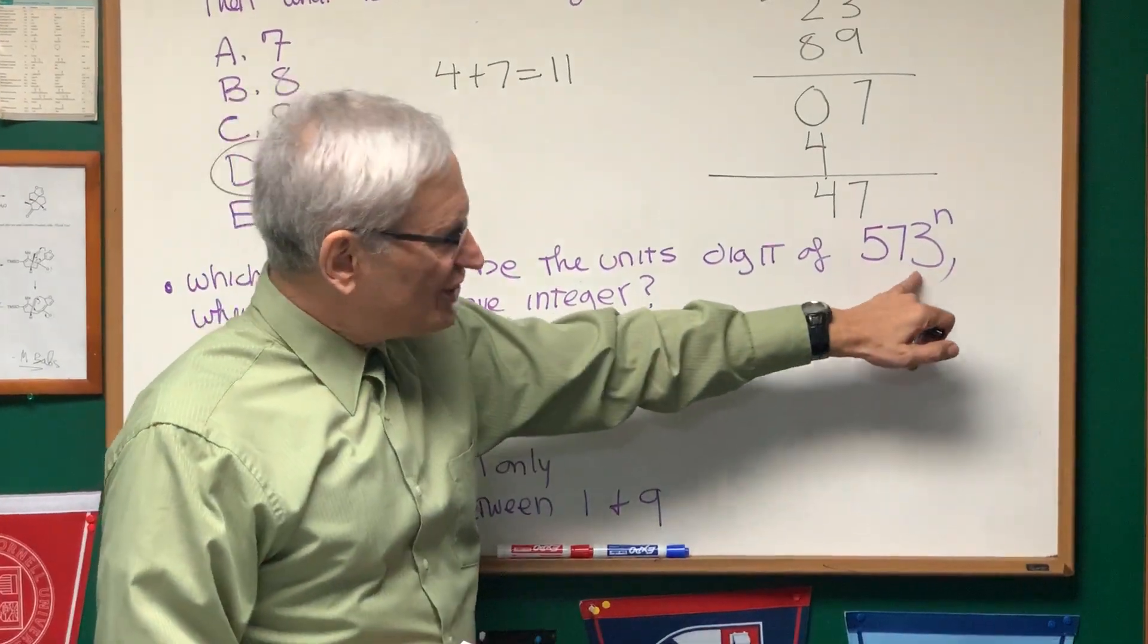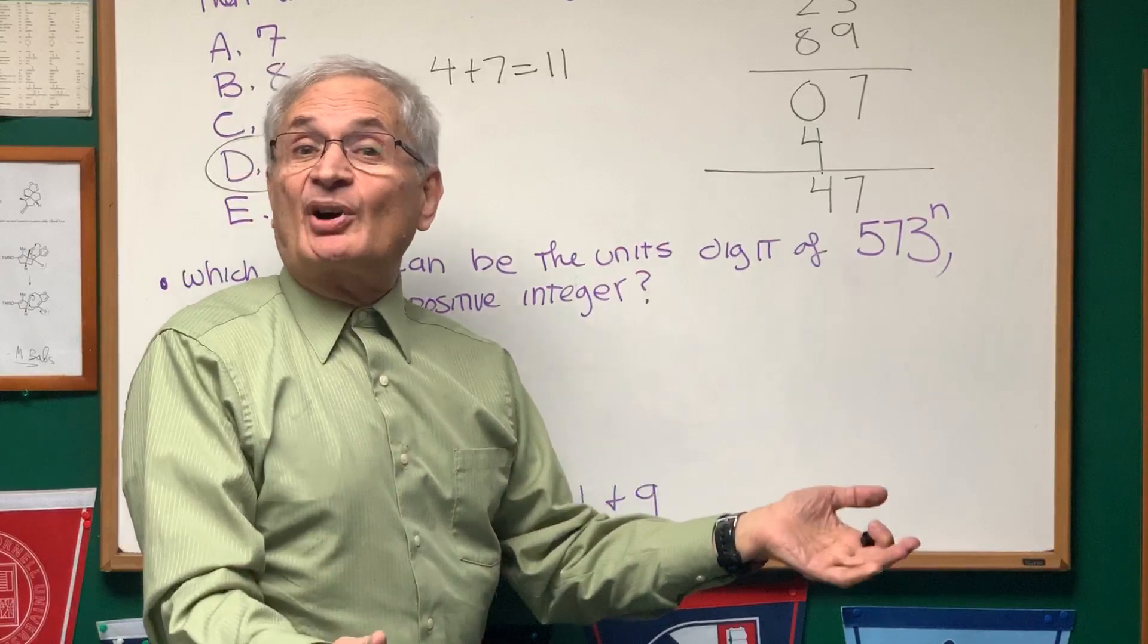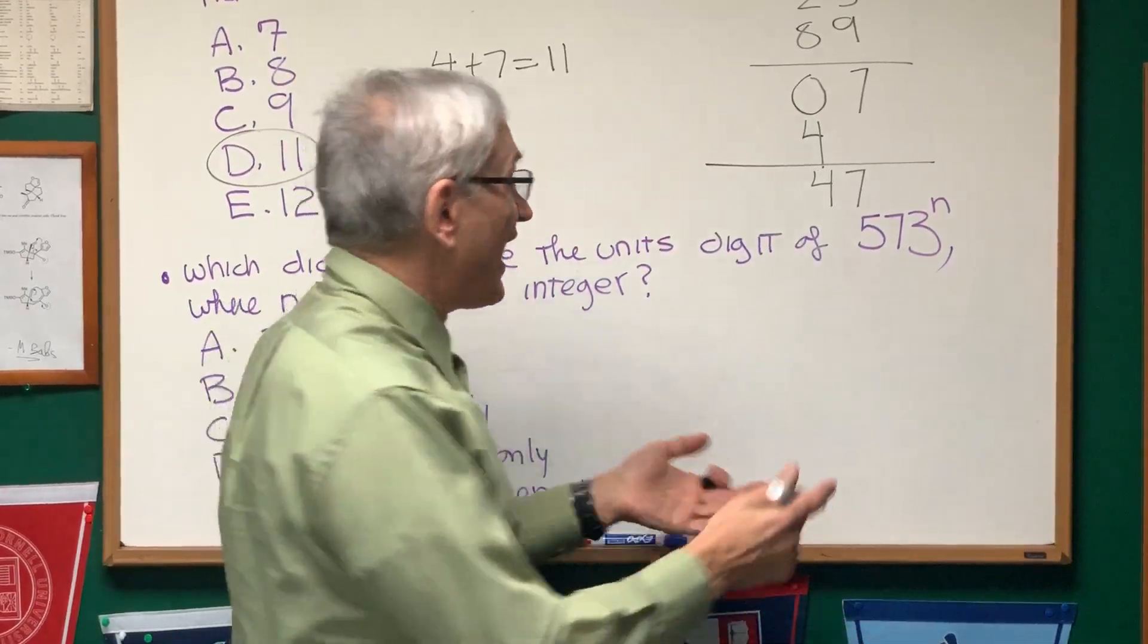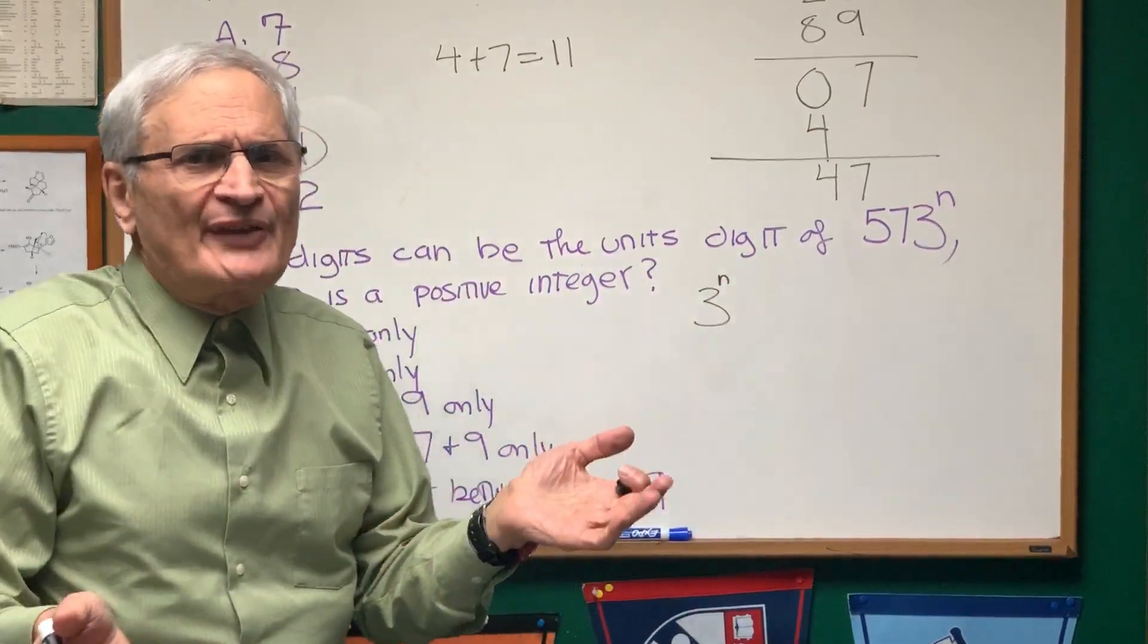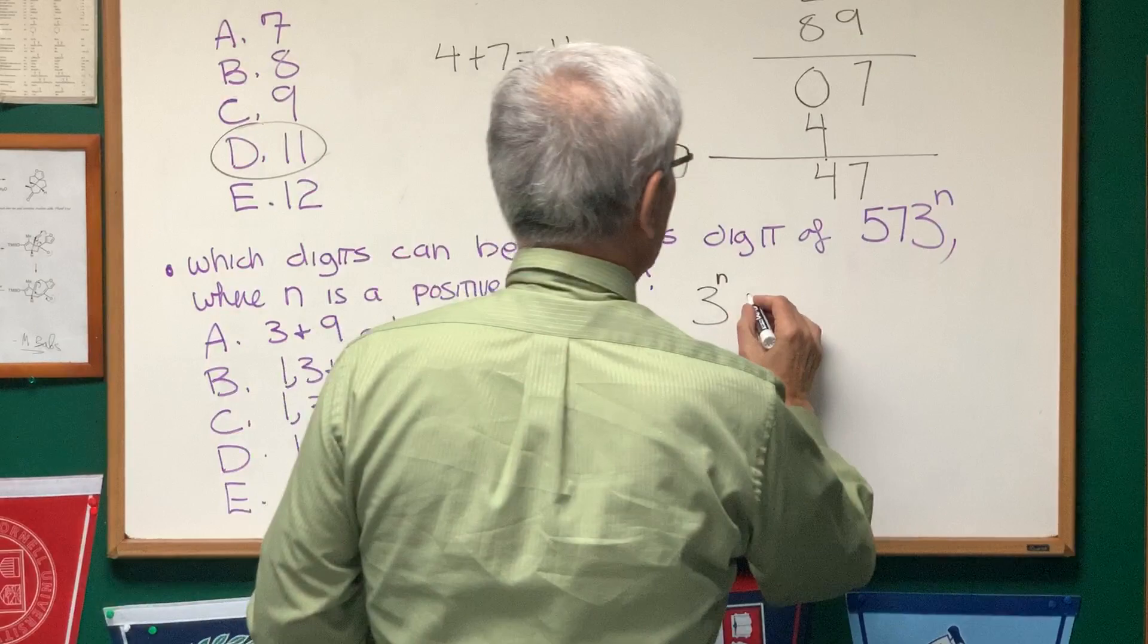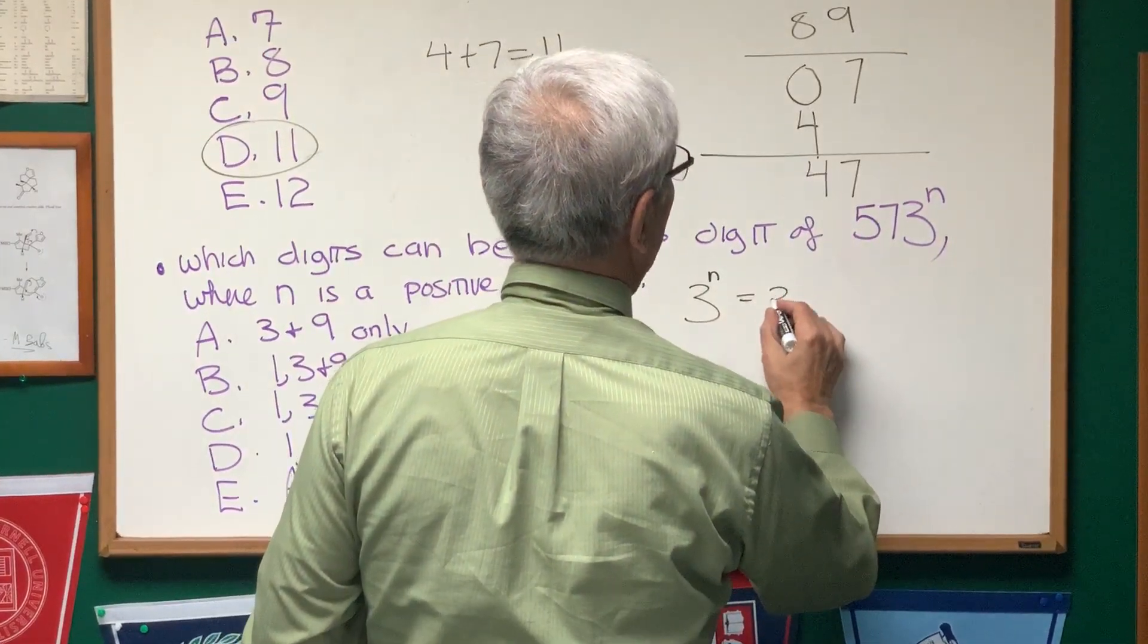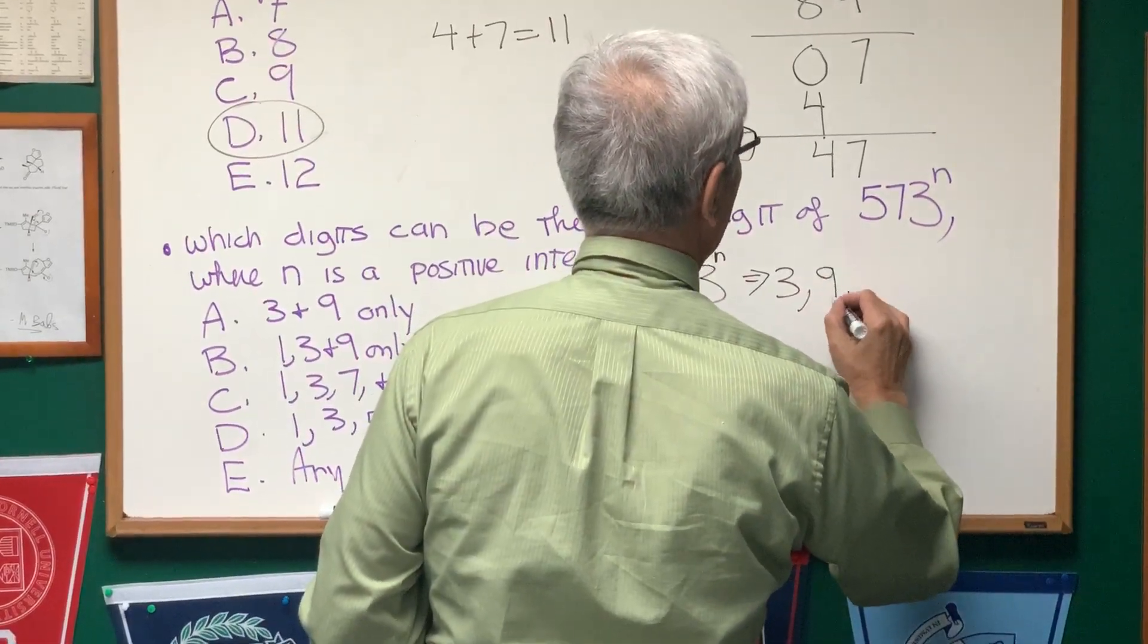Well, it turns out the digits place of 573 to the nth power is going to cycle through the same numbers as does three to the nth power. Once again, all we have to do is focus on the units place. So, if we look at the successive powers of three, we have three to the first power is three, three squared is nine.